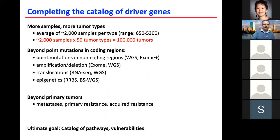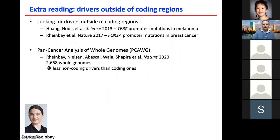We also asked: what about non-coding regions of the genome? The TERT promoter mutation found in 2013 is the poster case of non-coding promoter mutations — these are just upstream in the TERT promoter, affecting its expression level. In studying breast cancer, we identified FOXA1 promoter mutations. Together with the international community, studying 2,500 whole genomes from different tumor types, one take-home message was that we found non-coding drivers, but less frequently than coding drivers — roughly a ratio of 1 to 10.